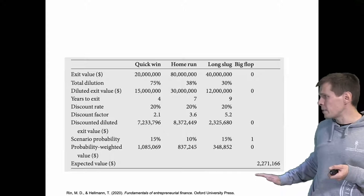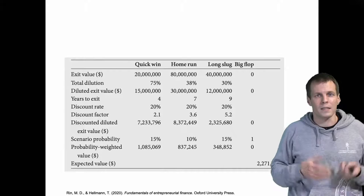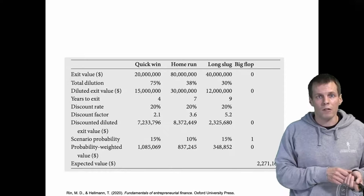You assign probabilities to each scenario, weight them, and take the weighted sum to get the expected value — which is the post-money valuation. If the company flops and can be sold, its value is zero, and this model estimates complete failure at a 50% probability. In summary: estimate the exit value, discount to the current value to get post-money valuation, then subtract the investment to get pre-money valuation.